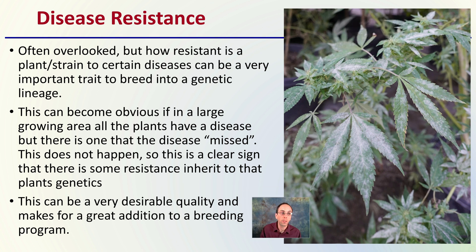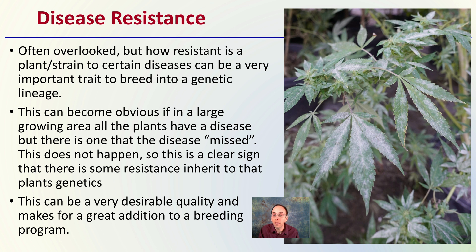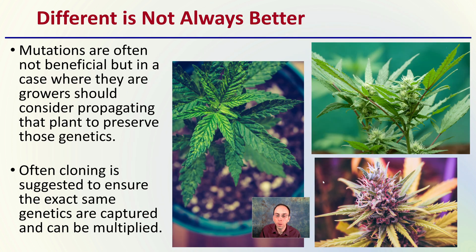Then there is disease resistance, which is often overlooked. How resistant a plant strain is to a certain disease can be a very important trait to breed into genetic lineages. This can become obvious in a large growing area if all plants have a disease but one simply has resistance to it — because something like powdery mildew would spread over the whole area, so a plant that isn't diseased has inherent resistance. That can be very advantageous and is a great addition to any breeding program. Here we see images of powdery mildew, and bud rot is also worth considering, as well as a host of others.